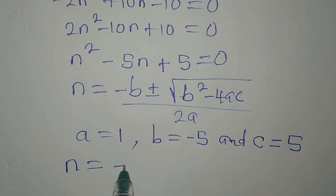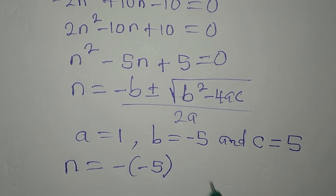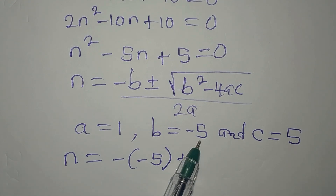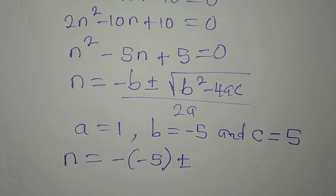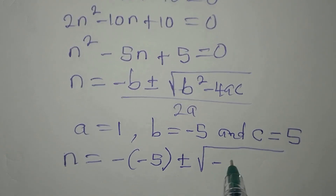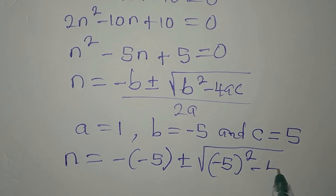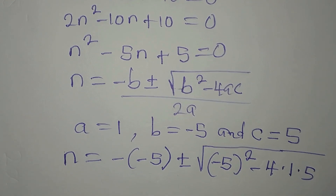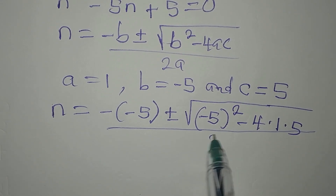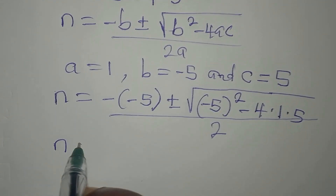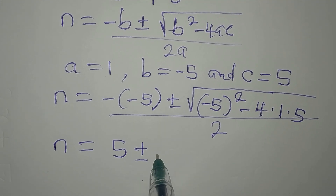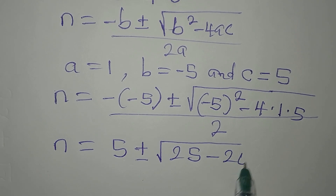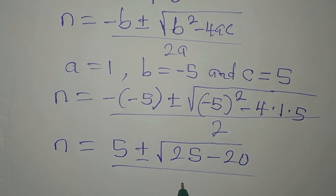N will be equal to minus of (minus 5), plus or minus square root of (minus 5) squared minus 4 times 1 times 5, all divided by 2 times 1, which gives 2. So N equals minus 5, plus or minus the square root of 25 minus 20, all divided by 2.